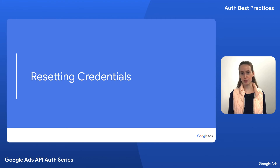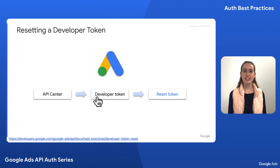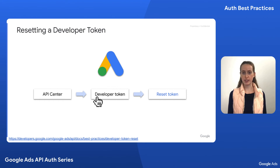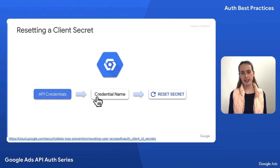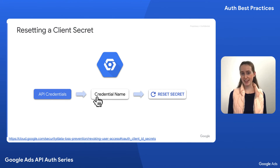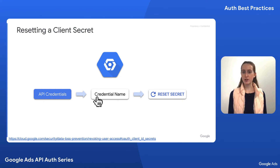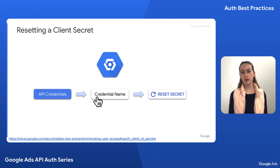If someone gets a hold of your credentials, here's how to reset them. You can reset your developer token in the API center of the manager account that generated it — this won't require going through the review process again, and you can use the new token immediately. If someone obtains your client ID and client secret, you do not need to reset the client ID, but you will need to reset the client secret. To do so, go to the API credentials page in the Cloud Console, click on the name of your credential, and click the reset secret button. It's especially important to manage credentials with a secrets management tool so that updates propagate to your application without authentication failures.